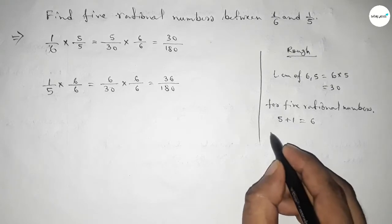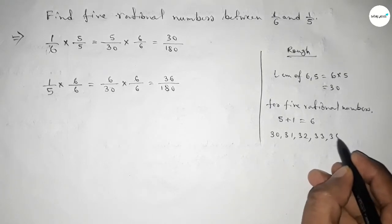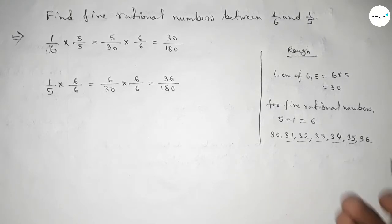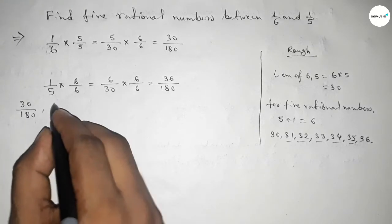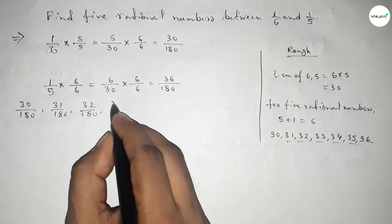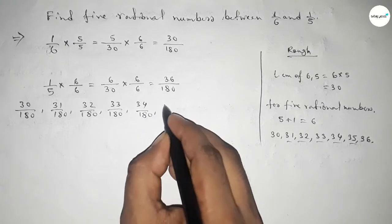Now between 30 to 36 we can find 5 natural numbers and by this natural number we can form 5 rational numbers. So this is 30 over 180, 31 over 180, 32 over 180, up to 36 over 180.